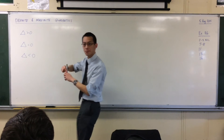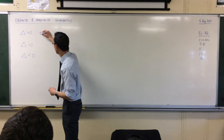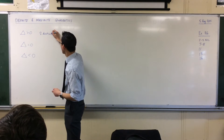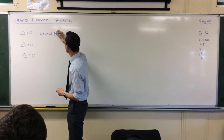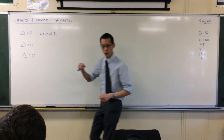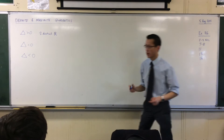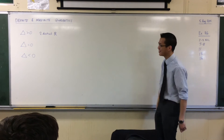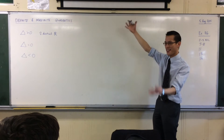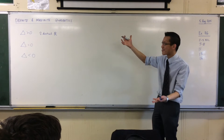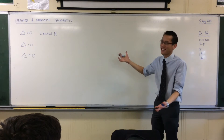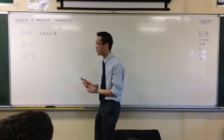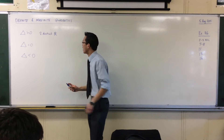A positive discriminant gives two distinct and real roots. That symbol, by the way, is the recognized conventional symbol for real numbers.